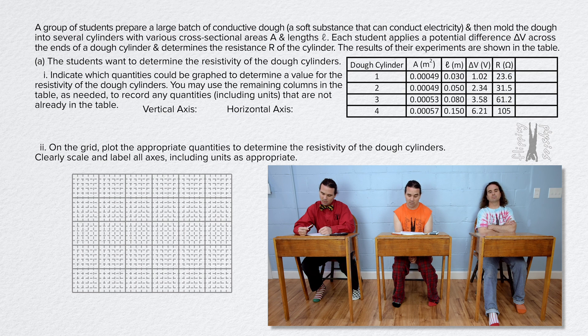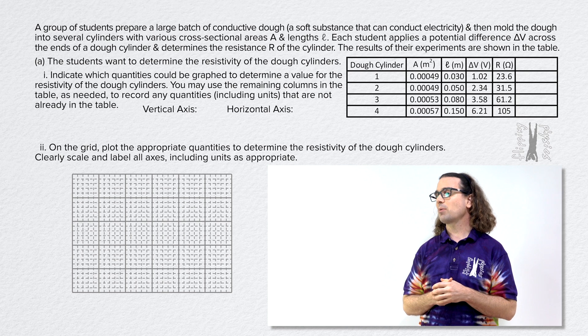Part A. The students want to determine the resistivity of the dough cylinders. Part AI. Indicate which quantities could be graphed to determine a value for the resistivity of the dough cylinders. You may use the remaining columns in the table as needed to record any quantities, including units that are not already in the table. Thank you Bobby. Bo, please answer part AI.